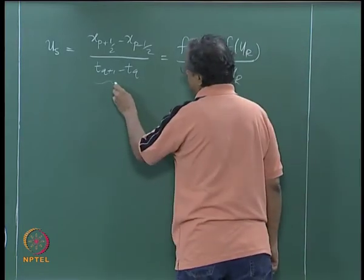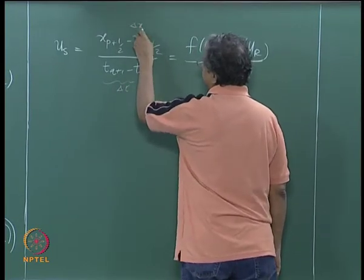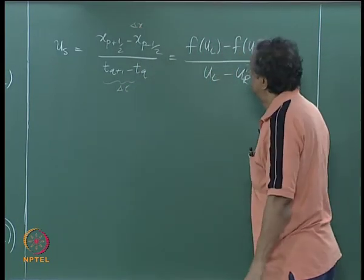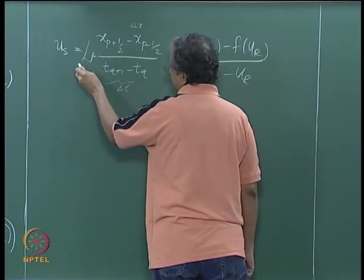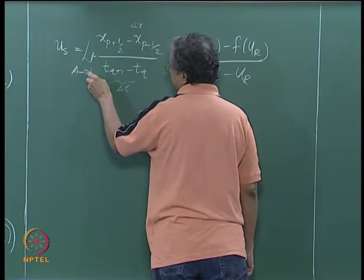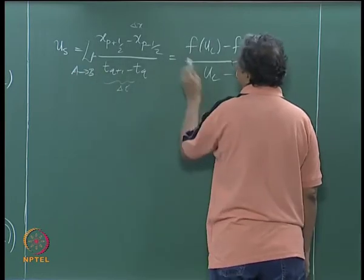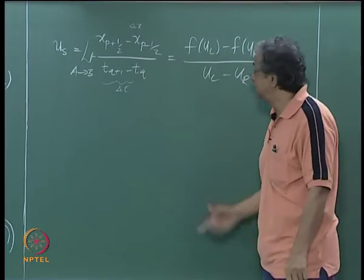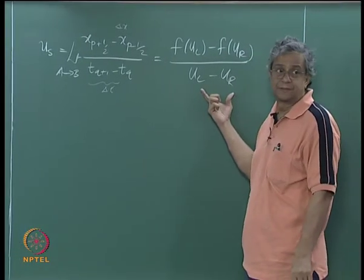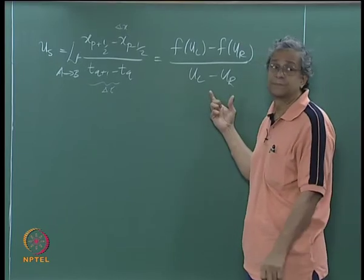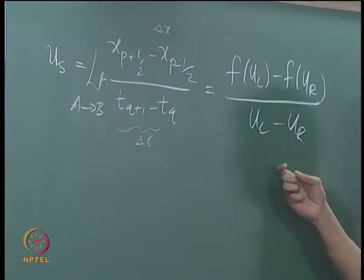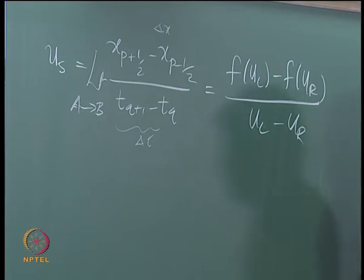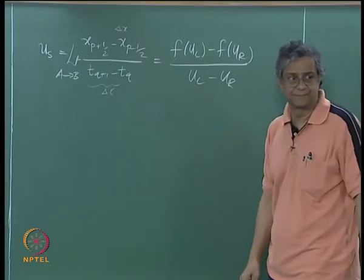This gives us: if I divide through, shock speed u_s equals (x_{p+½} minus x_{p-½}) divided by delta t, which is t^{q+1} minus t^q, and that equals f(u_L) minus f(u_R) divided by u_L minus u_R. The shock is a discontinuity and this still holds. We are able to divide by u_L minus u_R because the states are different.